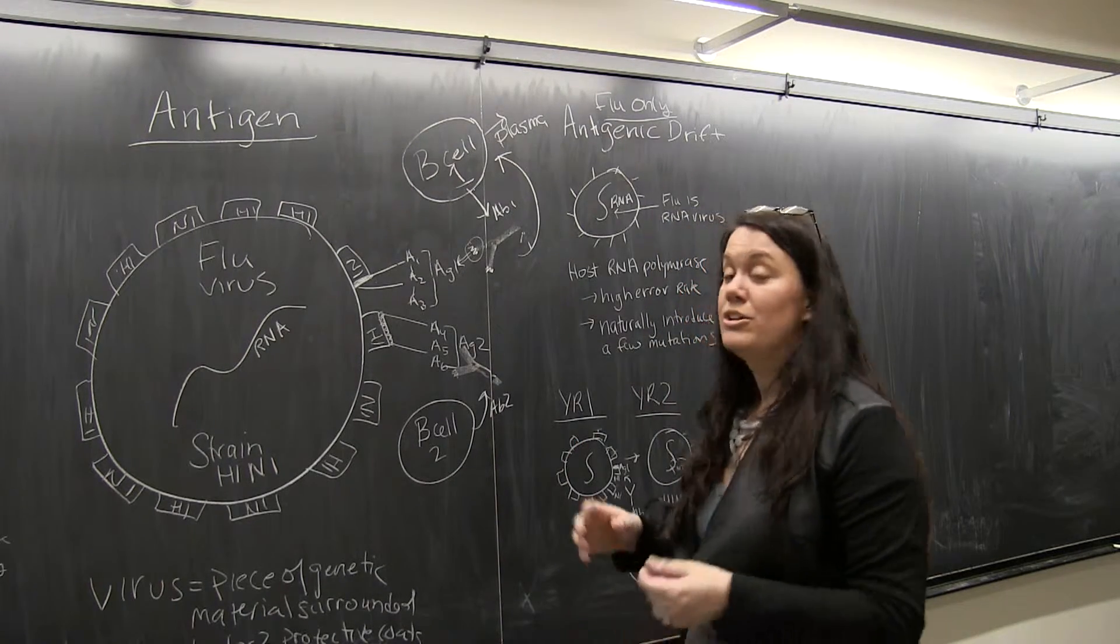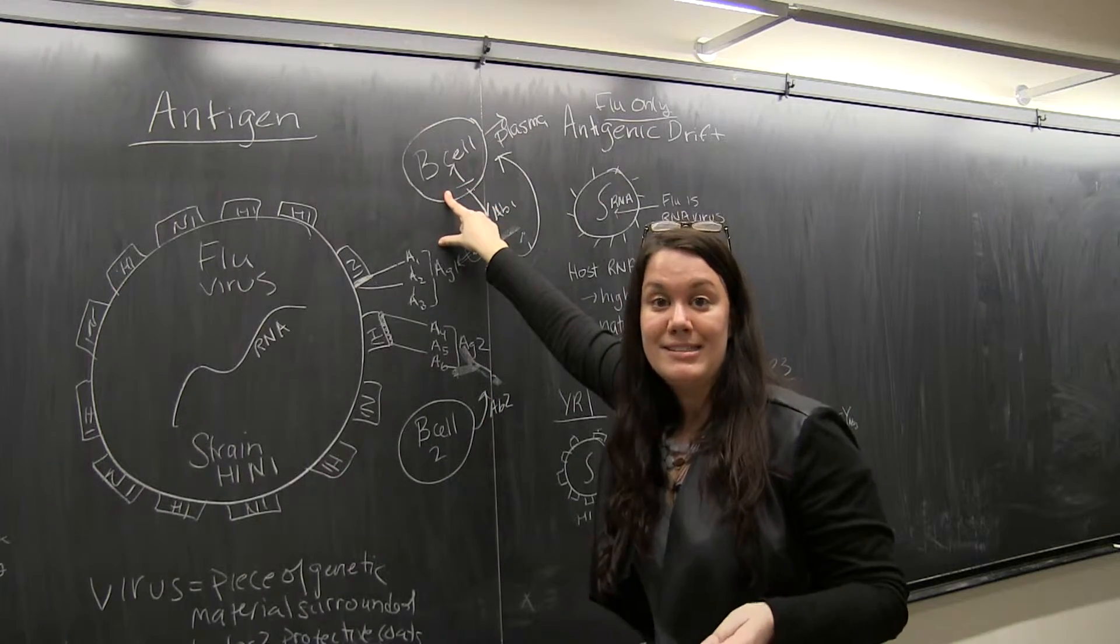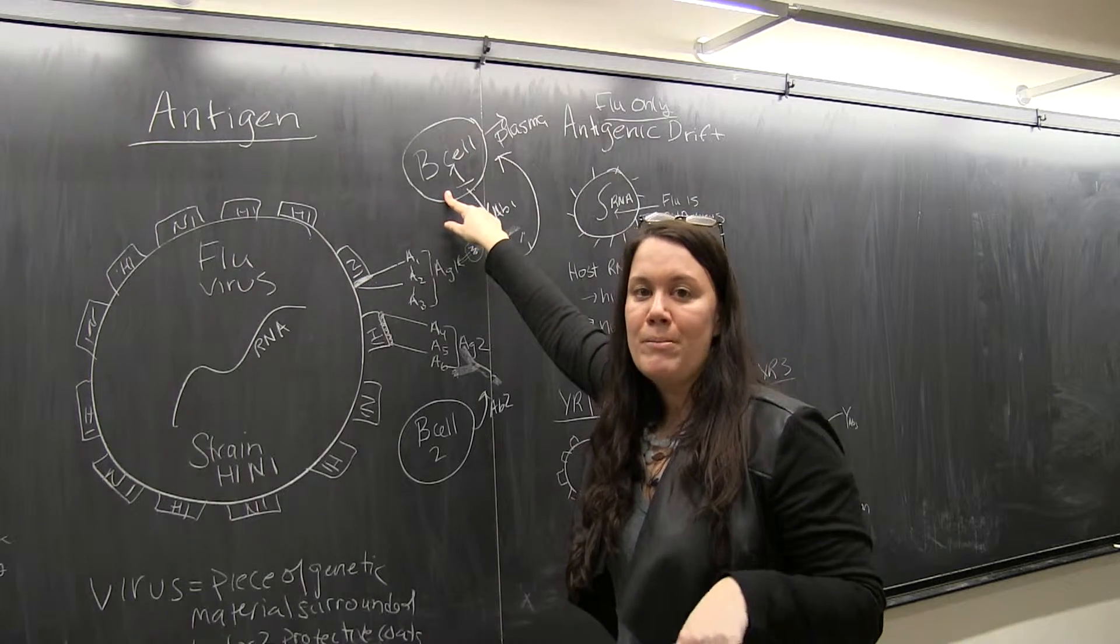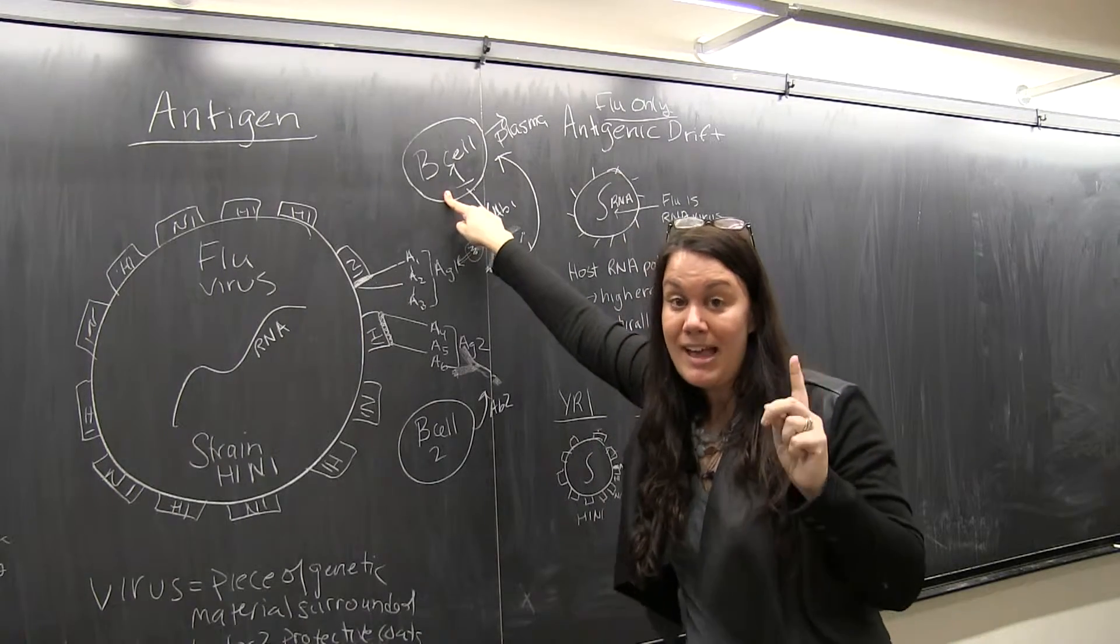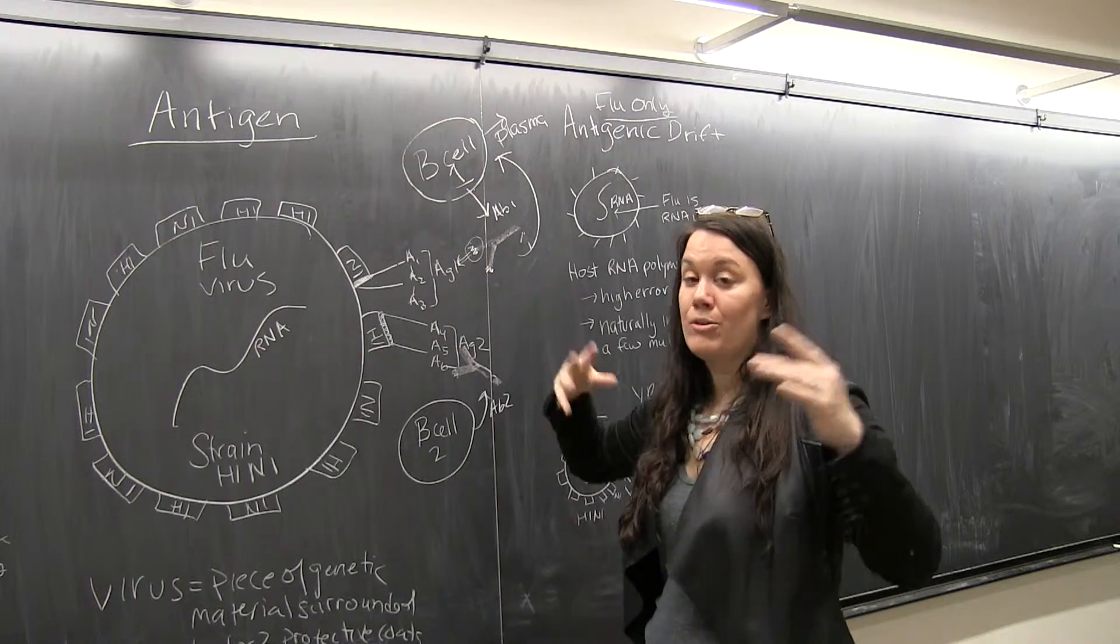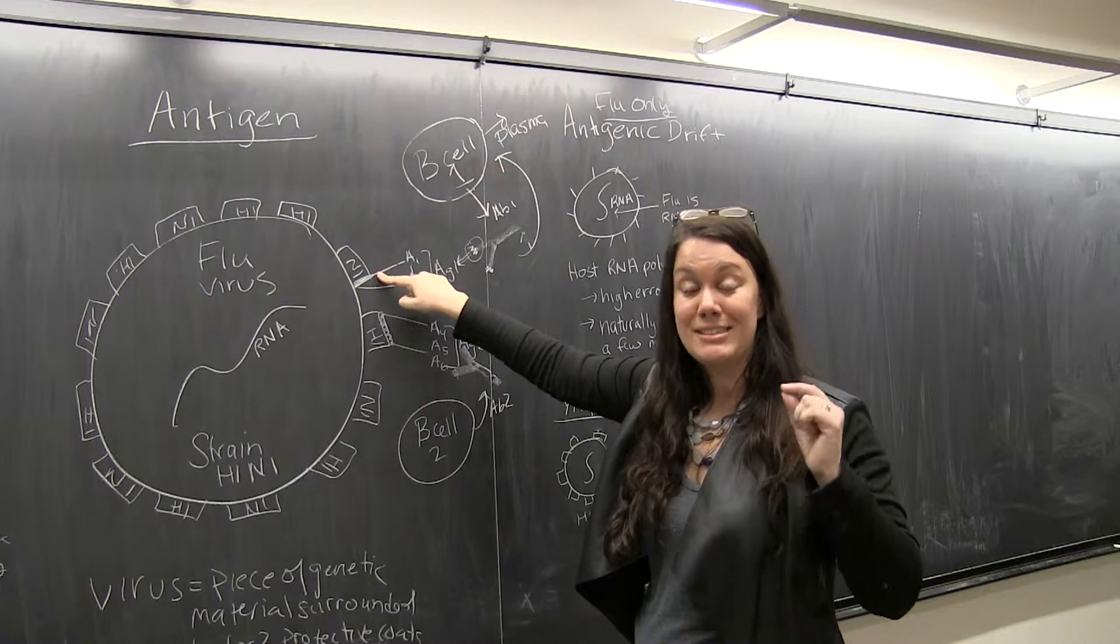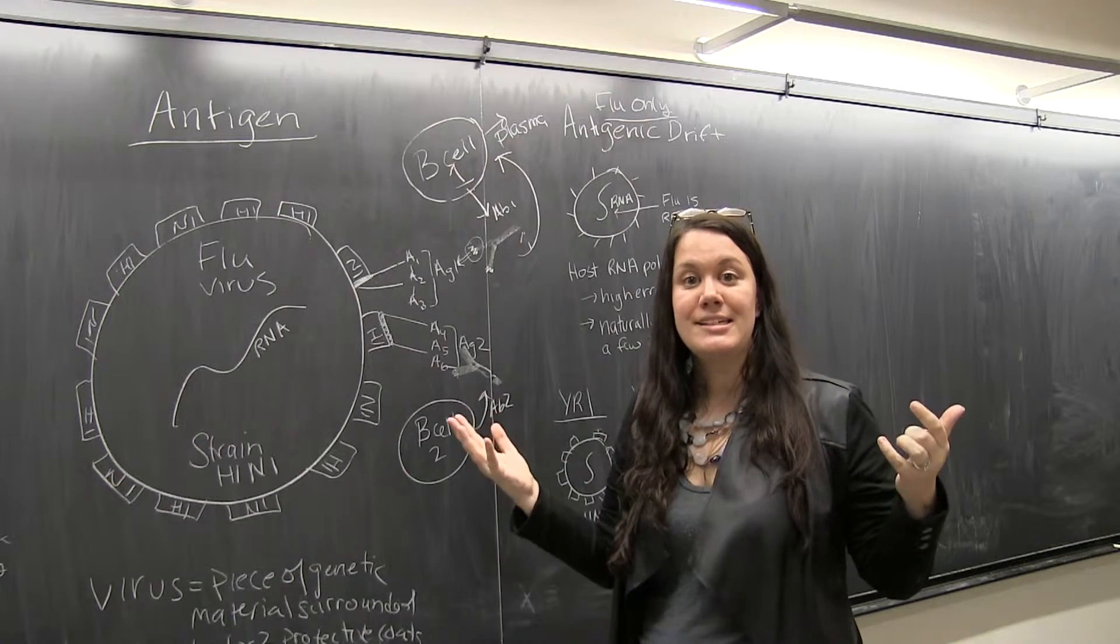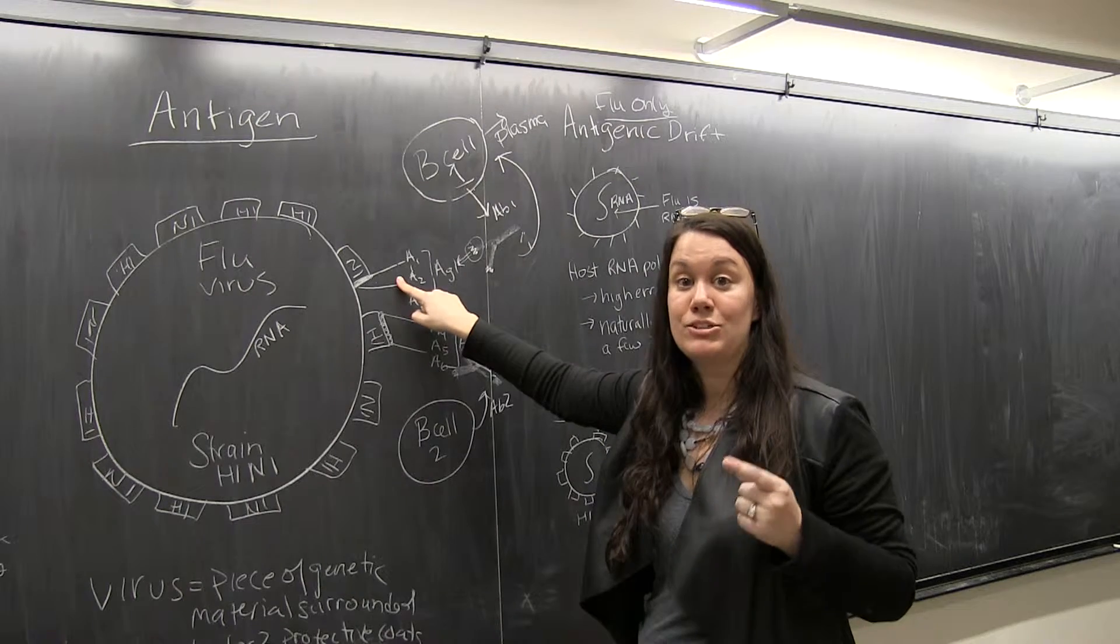So again, let's repeat that. The B cell, before it has recognized its pathogen or its antigen, will just make a low amount of antibodies, and it only makes one antibody, one kind of antibody that's only able to recognize one antigen. So randomly it goes throughout the body, it finds antigen one, it finds that specific antigen, and it attaches, it binds.